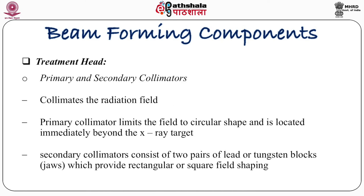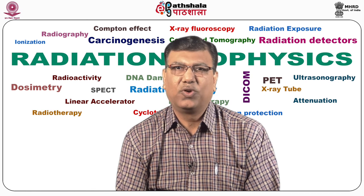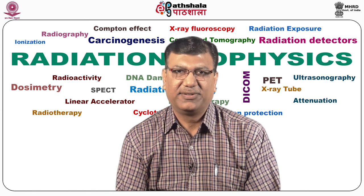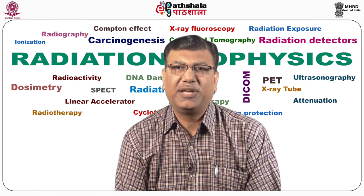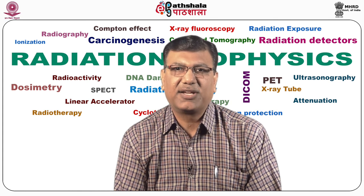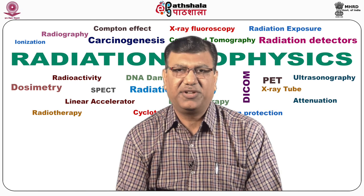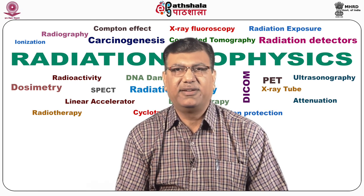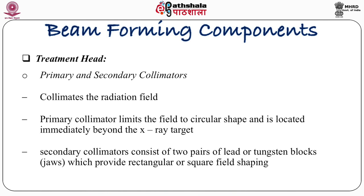The treatment head has primary and secondary collimators which collimate the radiation field. The primary collimator limits the field to a circular shape and is located immediately beyond the X-ray target. Secondary collimators consist of two pairs of lead or tungsten blocks — also called jaws — which provide rectangular or square field shaping. Most of the treatment marking done on the patient surface is either rectangular or square, so we have to change the field from circular to square shape, and that is why secondary collimators are used in the treatment head.